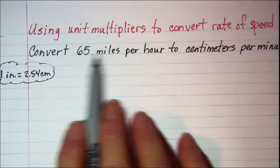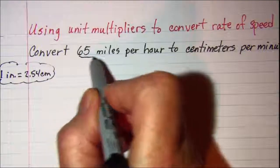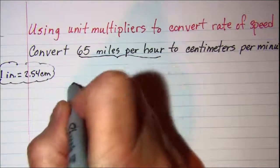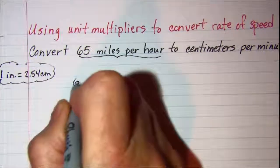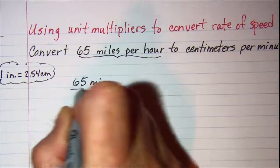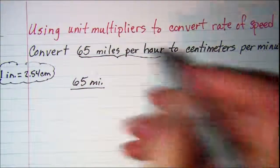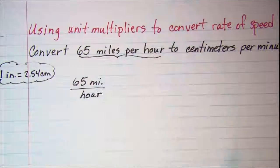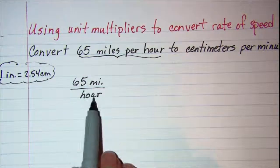This is a rate and I need to take the full 65 miles per hour and write that as a fraction. 65 miles, remember per means divided by and then my hour unit will be in the denominator. So this is my 65 miles per hour.